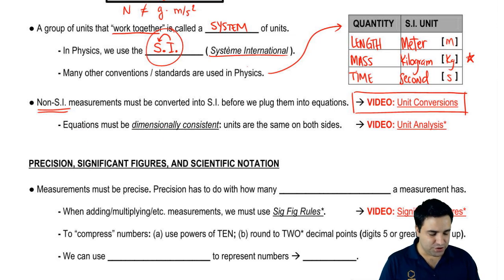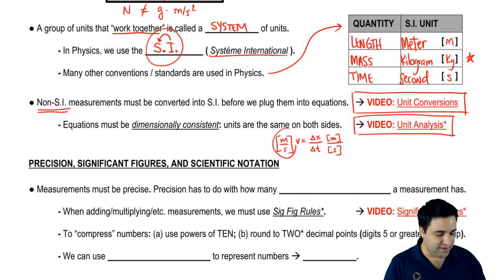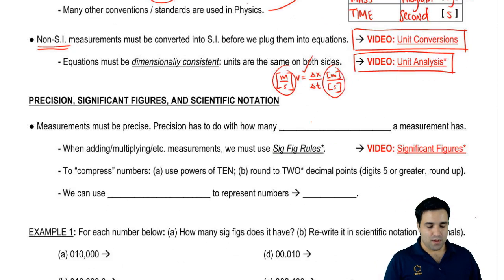Equations must also be dimensionally consistent. I kind of mentioned this briefly. It means that the units on both sides of the equation have to be the same. Most professors won't worry about this. They won't do problems with this. But if yours does, I'll post a video on that as well. So there's sort of an optional video on unit analysis. But a quick example: velocity is displacement over time. Velocity is measured in meters per second, and displacement is measured in meters, and time is measured in seconds. So on the left, I have meters per second. On the right, I have meters per second. So this equation is dimensionally consistent. It has unit consistency. The units on both sides are the same.